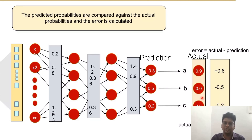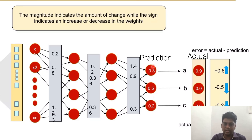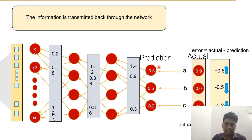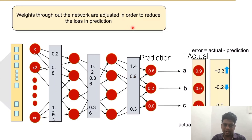This column represents the error function, this column the actual values, and this column the predicted values. We have to increase the predicted value for A by +0.6, decrease for B by −0.5, and decrease for C by −0.2. This information is transmitted back through the network — that is what we call backpropagation. The arrow marks shown in orange represent updating the weights in the reverse direction.